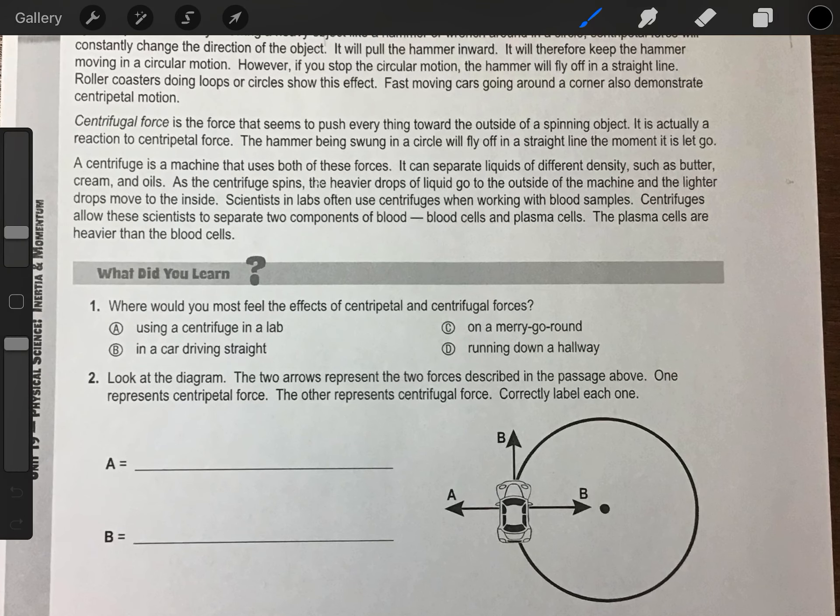Centrifugal force is the force that seems to push everything toward the outside of a spinning object. It is actually a reaction to centripetal force. The hammer being swung in a circle will fly off in a straight line the moment it is let go. A centrifuge is a machine that uses both of these forces. It can separate liquids of different densities such as butter, creams, and oils. As the centrifuge spins, the heavier drops of liquid go to the outside of the machine and the lighter drops move to the inside. Scientists in labs often use centrifuges when working with blood samples. These centrifuges allow these scientists to separate two components of blood, blood cells and plasma cells. The plasma cells are heavier than the blood cells.